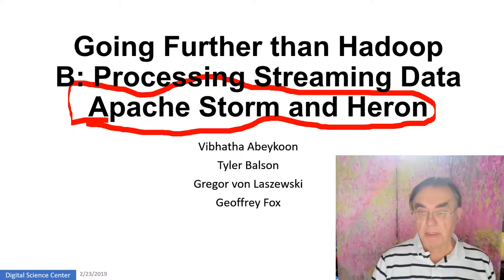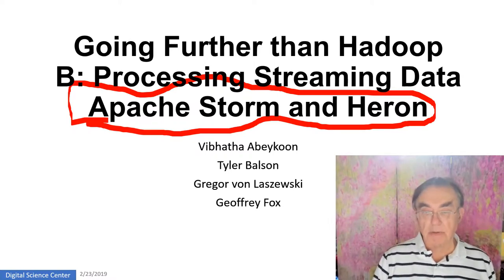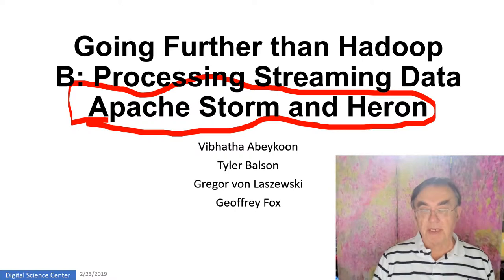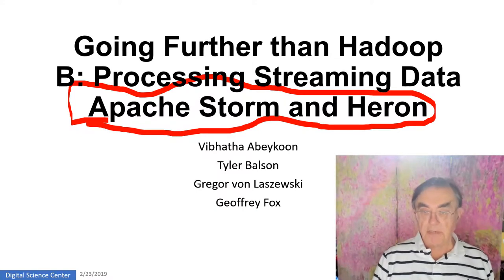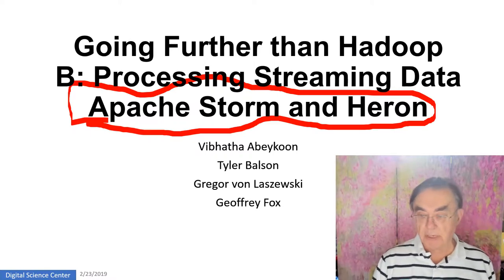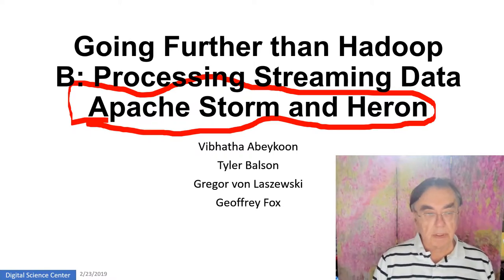A major commercial use of streaming data is probably advertising. Every time you click on a page, a click is streamed and the significance of that click is analyzed, and they find the best possible way of extracting money from you — the high point of computer science research these days.